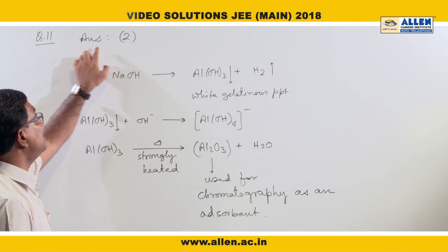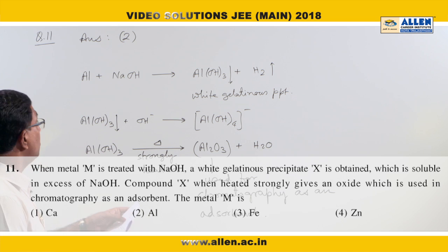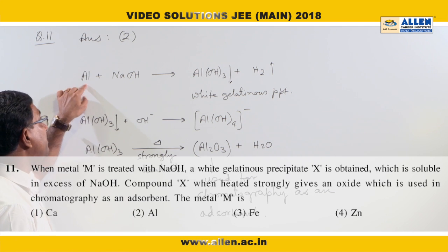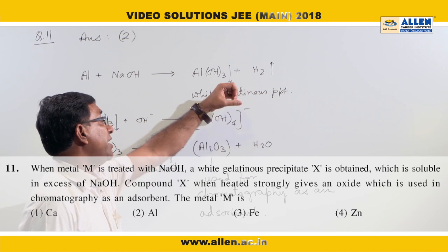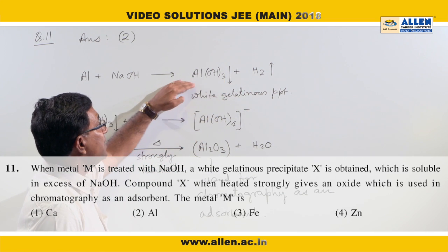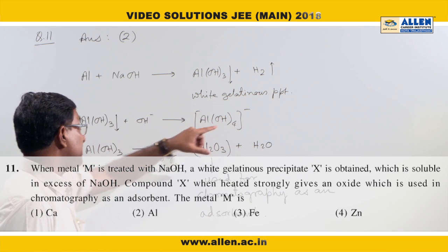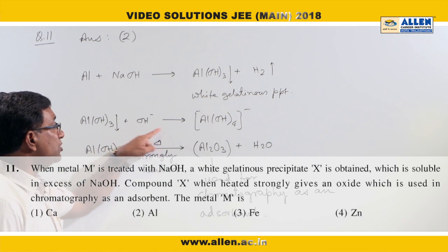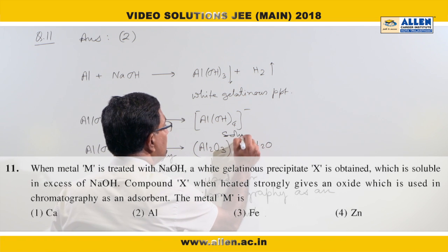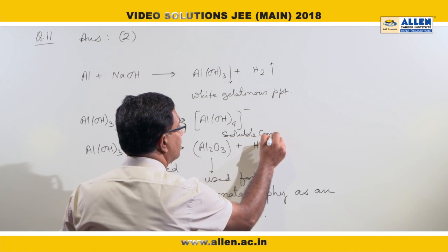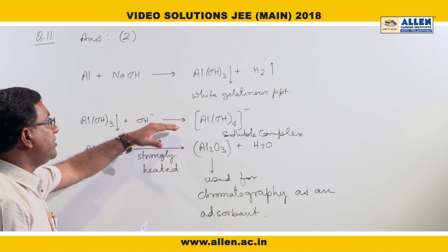Question number 11, answer is 2. Among the given options, only the metal aluminium reacts with NaOH to give Al(OH)₃ plus hydrogen. Hydrogen escapes from the system and Al(OH)₃ is available in the form of a white gelatinous precipitate, which reacts with excess NaOH to give a soluble complex. This soluble complex meets the requirement given in the question.